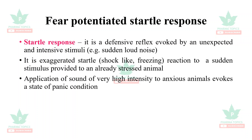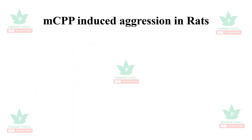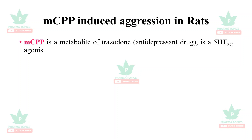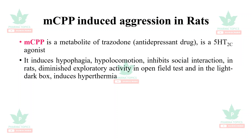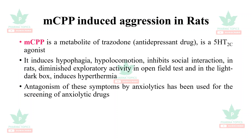Chemical-induced anxiety in rats uses mCPP, a metabolite of trazodone — an antidepressant drug. It is a 5-HT2C agonist which induces anxiety; it induces hypophagia, hypolocomotion, inhibits social interaction in rats, diminishes exploratory activity in open field test and the light-dark box, and also induces hyperthermia. Antagonism of these symptoms by anxiolytics has been used for the screening of anxiolytic drugs.